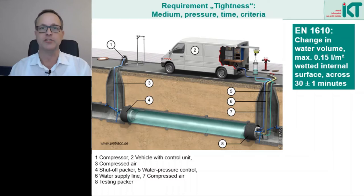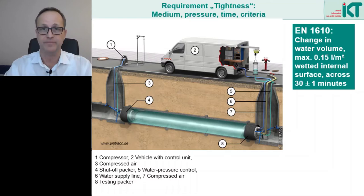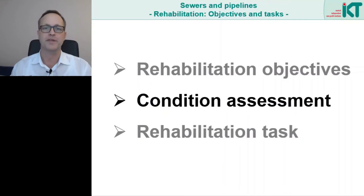A leak test is therefore useful and common after rehabilitation. In the case of repair measures, however, this can be very difficult since repair is by definition a local improvement, and the leak test of only one local point can be more complex than testing the entire section. Besides the leak test, there are of course many other methods for assessing the condition of defective and rehabilitated sewers.